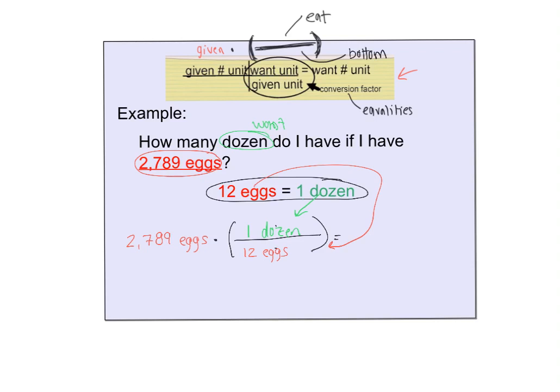Now we multiply. In my calculator, I'm going to take 2,789 eggs times 1 dozen, and then divide that answer by 12 eggs. Usually what I put in my calculator is just 2,789 times 1, hit equals, and then divide that answer by 12. What I end up getting is 232.4.